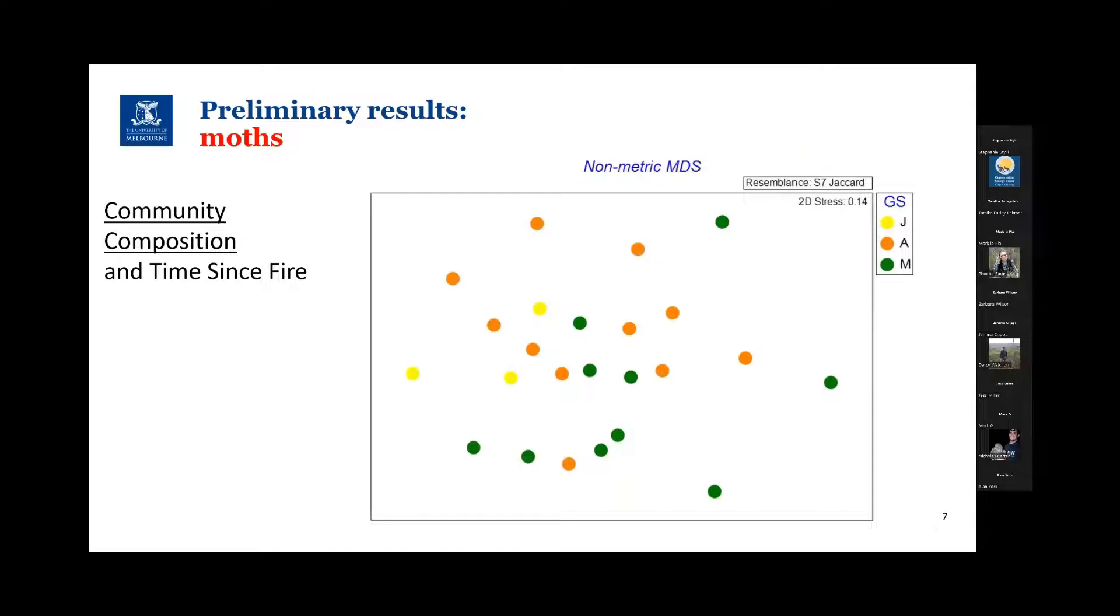So if we look beyond just simple metrics as abundance and richness, here we're looking at community composition, the output from an ordination analysis. The dots represent sites. Their color scheme represents their growth stage or the time since fire category. Their proximity to each other tells you a bit about how similar their moth species composition is.